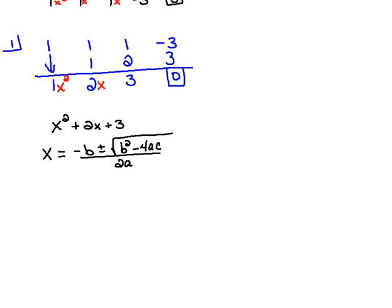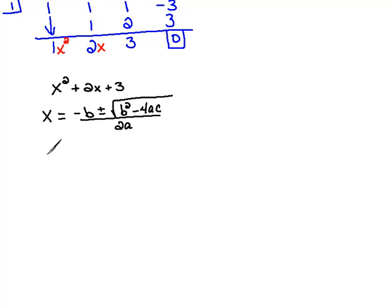So we're going to plug in what we know. I'm going to move my screen up so we can see that's going to be x equals the opposite of b would be negative 2 plus or minus the square root of b squared. So 2 squared would be...